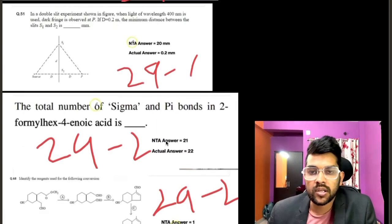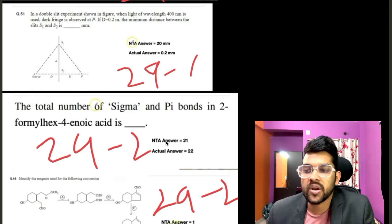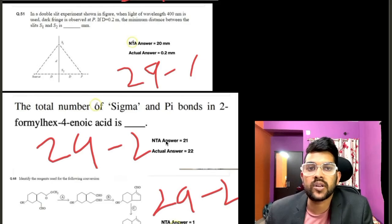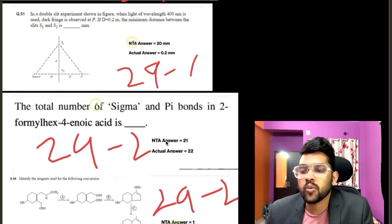So now if you talk about 29 second shift, before that I would like to inform you what is the meaning of bonus and error. Bonus means the question statement is having some problem, so that will be treated as a bonus because they will drop that question in the final answer. So every student will get the marks even if you have attempted or not.